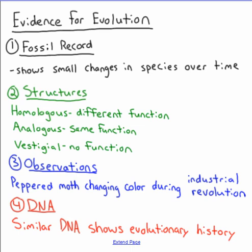Analogous structures have the same function but different structure — for example, the bird wing, the bat wing, and the butterfly wing all function for flight but have different underlying structures. Vestigial traits or structures are evidence of evolutionary history because they don't really serve a purpose anymore, such as goosebumps.